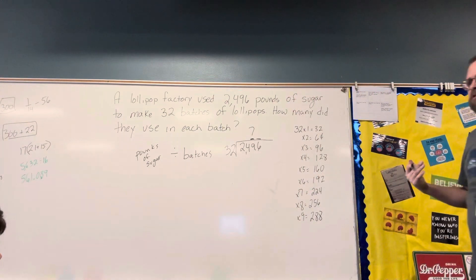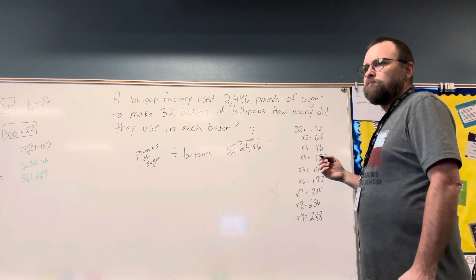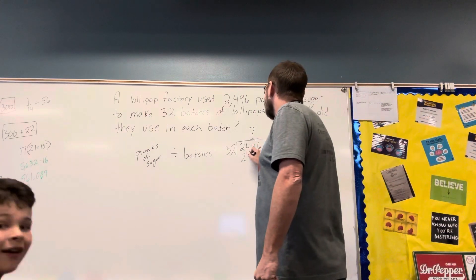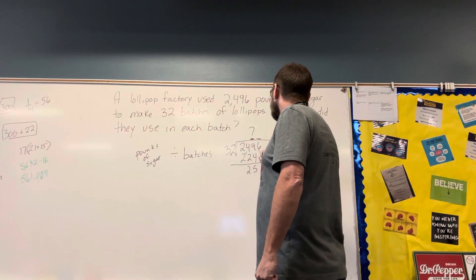So seven is correct. Ethan, what is 32 times 7? 32 times 7 is 224. Now we have 256.